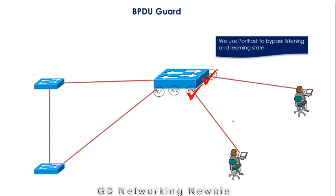BPDU Guard is the topic for today. If you remember from the video on the PortFast feature of a switch, we use PortFast to bypass the listening and learning states of STP. In STP we have these two states, and after these two states we can move to the forwarding state.